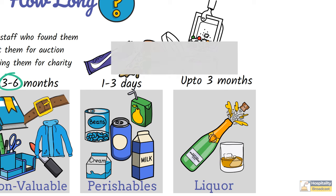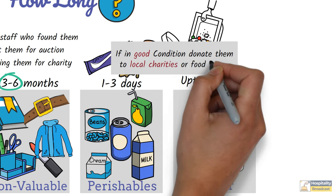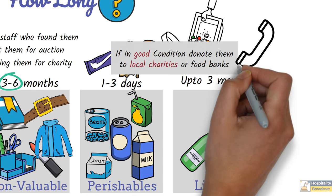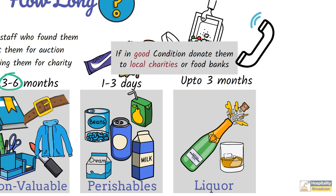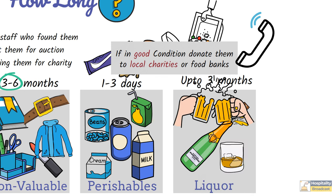In cases where items are in good condition and within expiry date, some hotels might choose to donate them to local charities or food banks. Again, if the item is of some specific high value brand, then hotel might try to contact the guest before disposing. Also in certain situations, these items might be consumed by hotel staff.